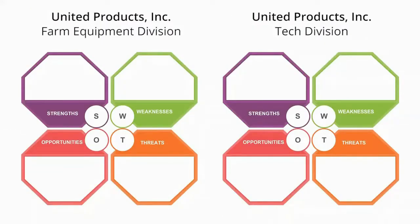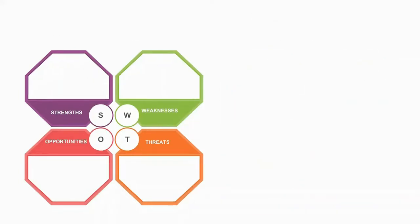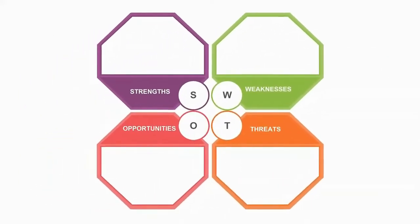It is important to note that a strength for one part of your organization might be a weakness for another. For instance, the old-fashioned brand image and 100-year-old history of a company may benefit the farm equipment division but may not be such a boom for the new tech division. For this reason, you may want to perform a different SWOT analysis for each part of your business rather than for the business as a whole. Also, you will very likely have the same factors listed in more than one category — you can see how a company's weakness, such as its lack of presence in a marketplace, could also be a major opportunity going forward.